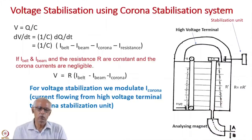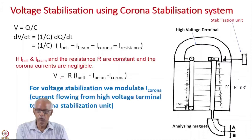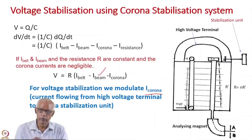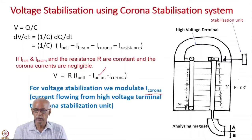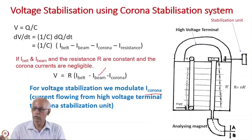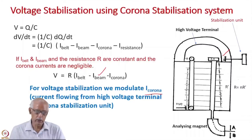V equals Q by C is the basic formula. The voltage V will depend on I-belt, which we are supplying, and the current drawn through the corona stabilization. We modulate the corona current because the beam current is more or less fixed, and the belt or pellet chain has to take care of the balance. We modulate I-corona over the corona systems for corona stabilization, and the voltage is stabilized.